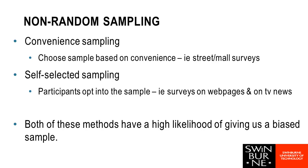Convenience sampling is exactly what it sounds like — it's doing whatever is the easiest way of getting some data. For face-to-face data, people with clipboards in the street or shopping mall are an example of convenience sampling. The big problem is that it limits who could possibly be selected. If they're in a particular shopping mall on a particular day, only people who go to that mall and happen to be there at that time could be selected, and people must also agree to participate.